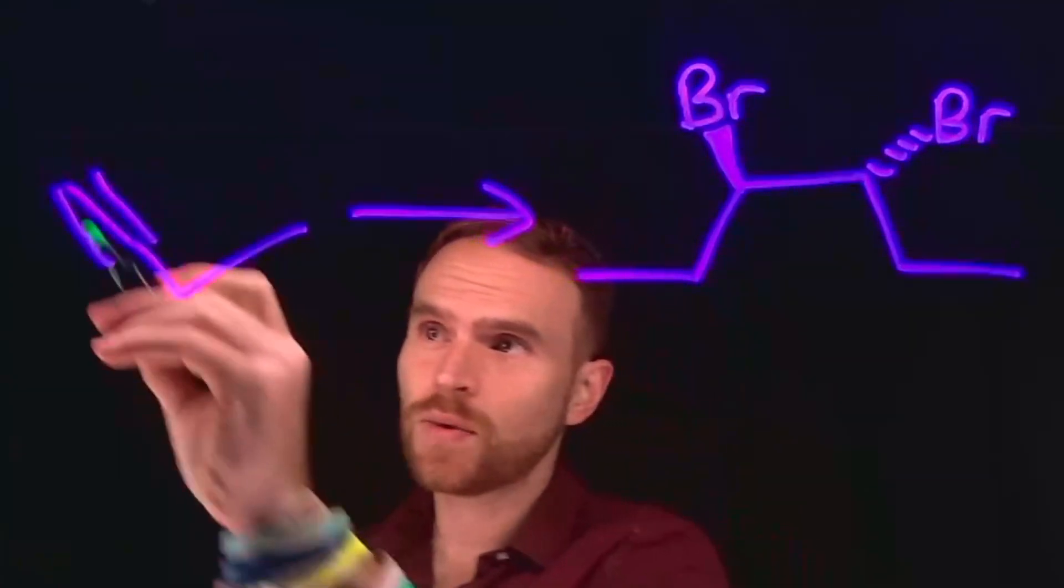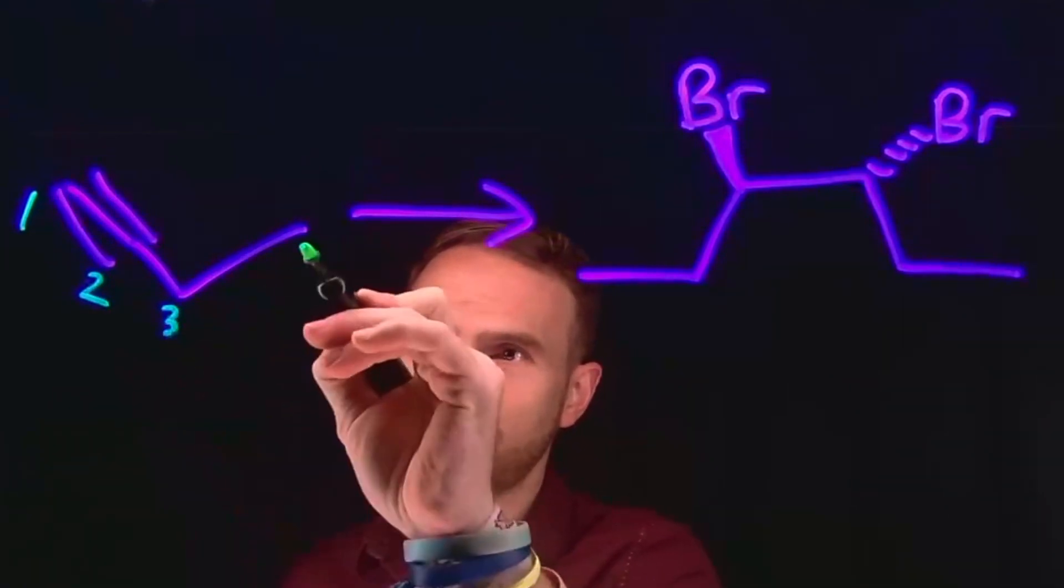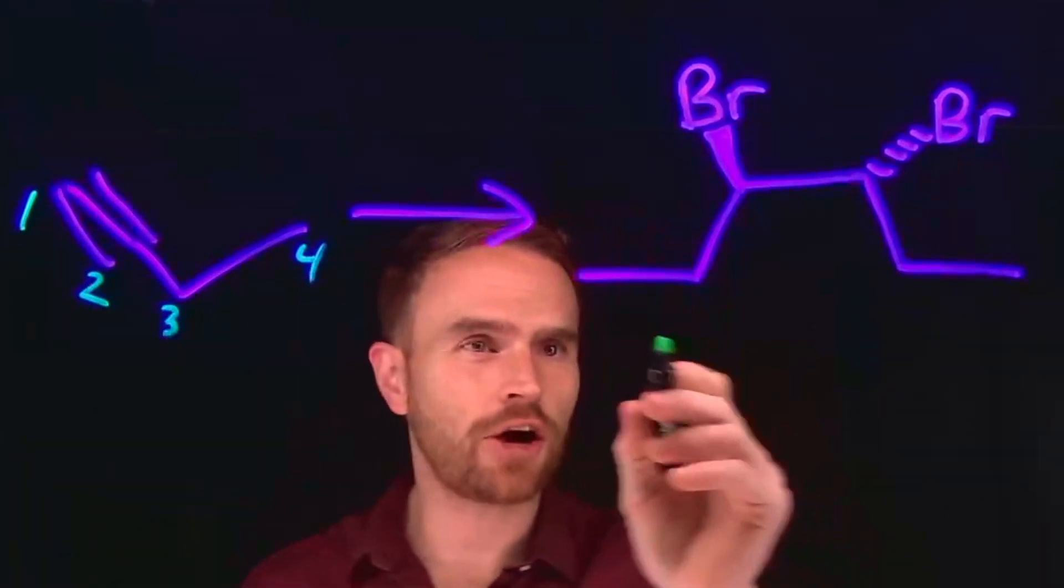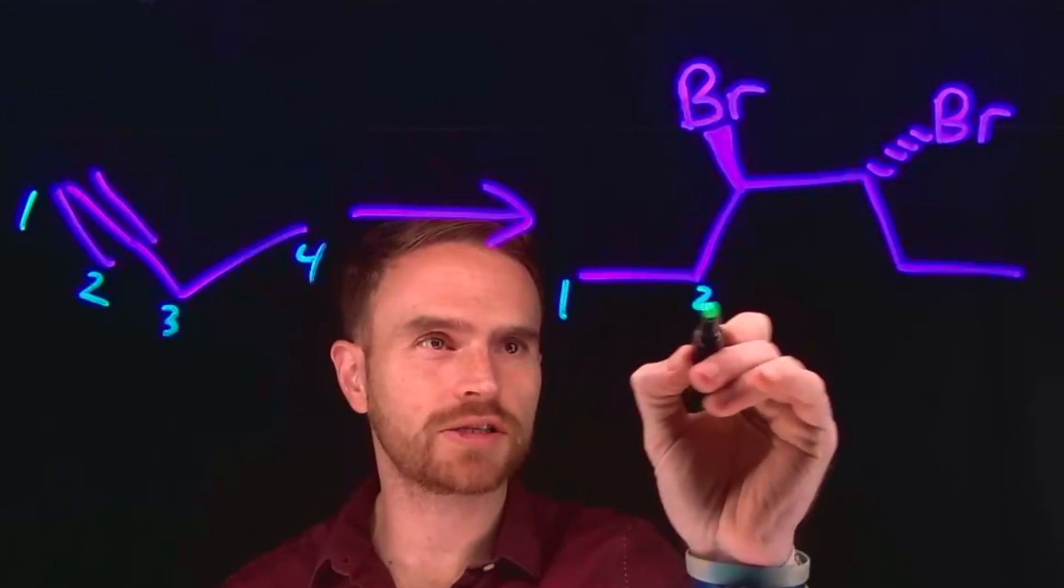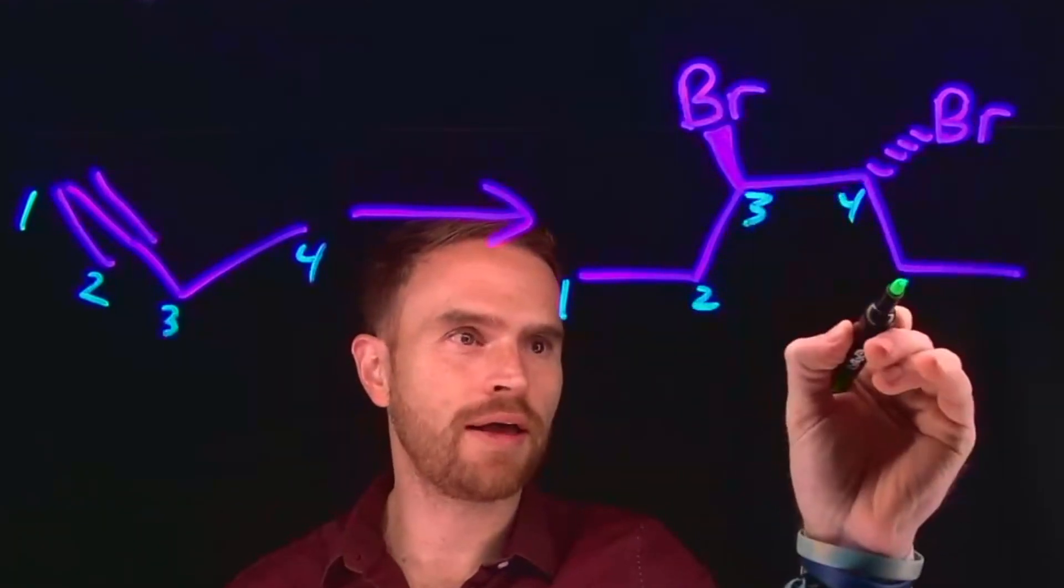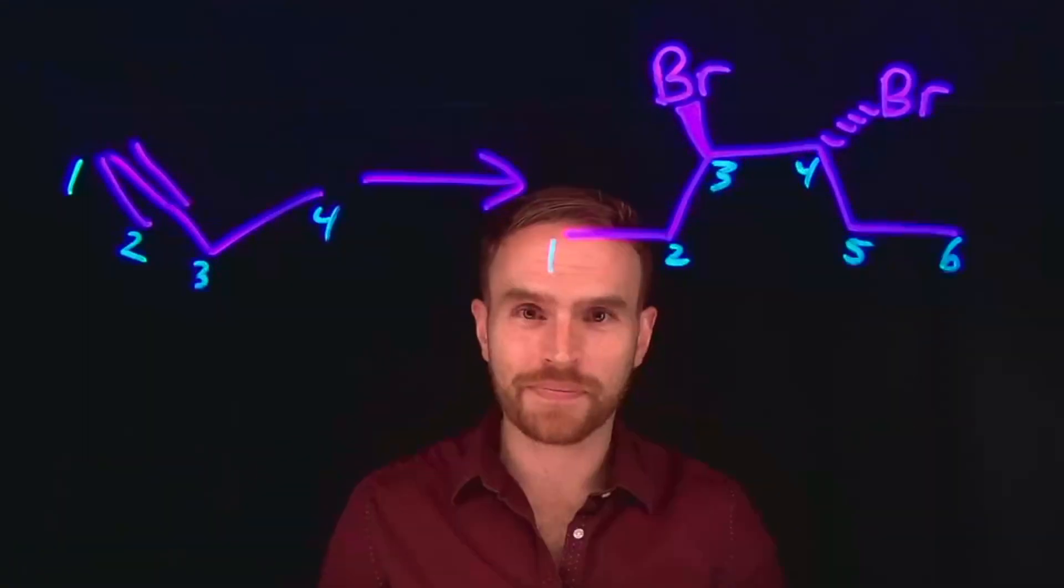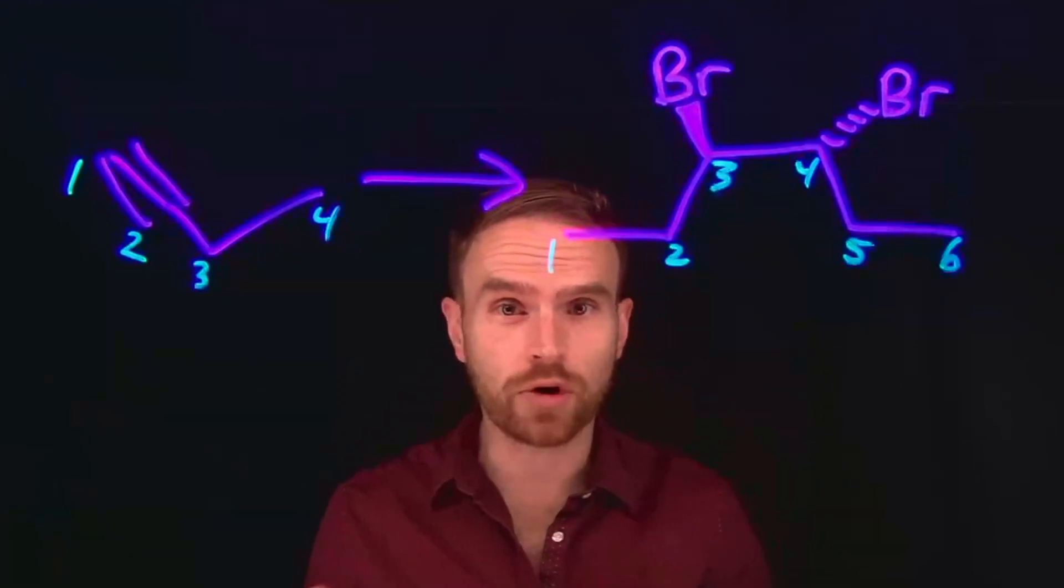For our reactant, we have a 1, 2, 3, 4 carbon chain, whereas on the product side, we have a 1, 2, 3, 4, 5, 6 carbon chain. Therefore, it's likely we need to form a new carbon-carbon bond.